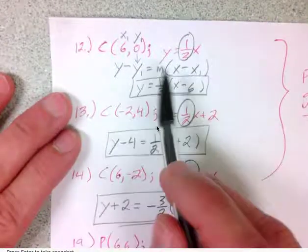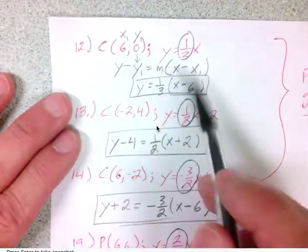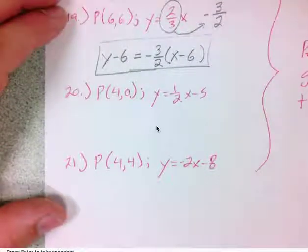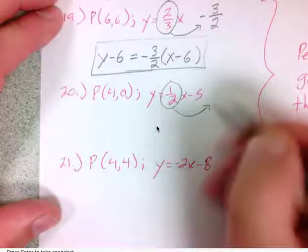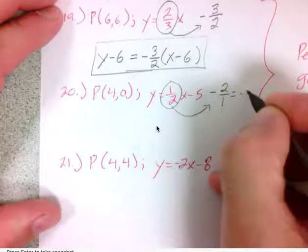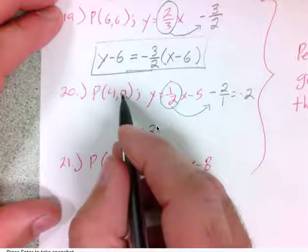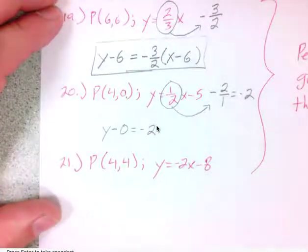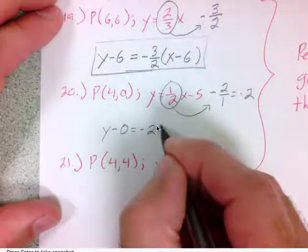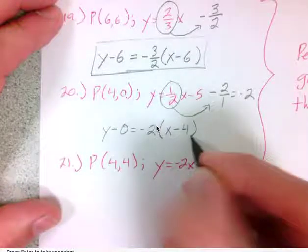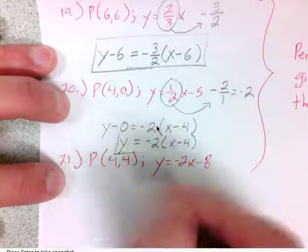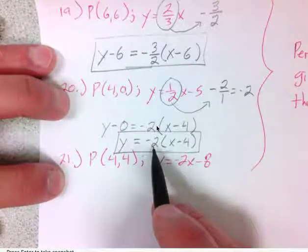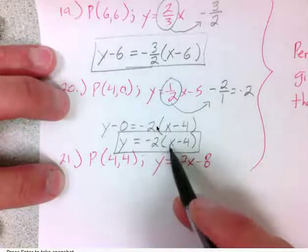This is point-slope form — to write it, you need a slope represented by m, and one point the line goes through, called x₁ and y₁. For number 20, I want a line perpendicular to the given line with slope one-half, so I need the opposite reciprocal: negative two over one, which is just negative two. The point has coordinates (4, 0), so: y minus zero equals negative two times the quantity x minus four. Simplified, that's y equals negative two times (x minus four), or y equals negative two x plus eight.